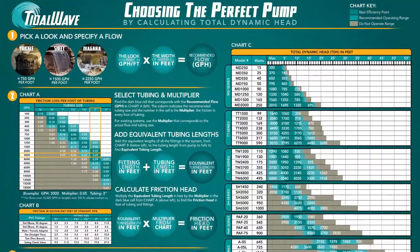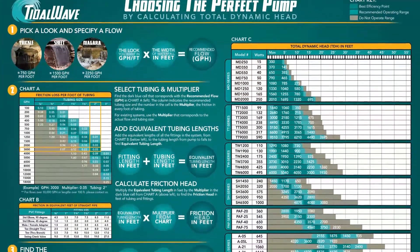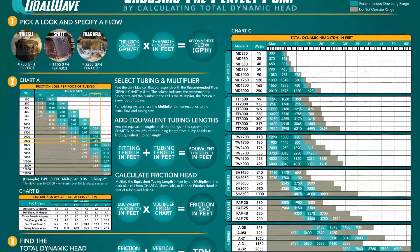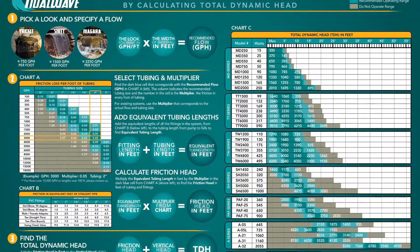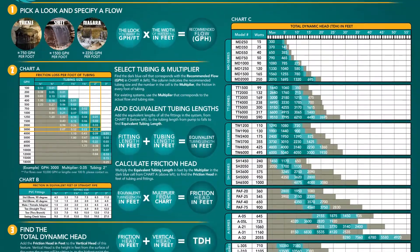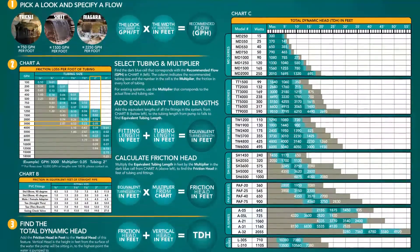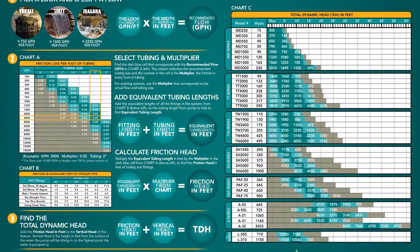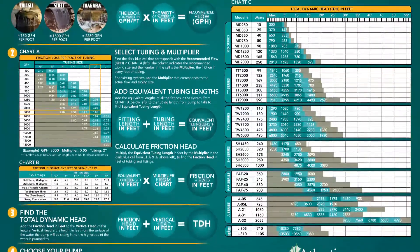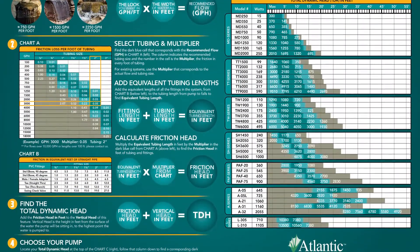Choosing the wrong pump for your water feature can leave you with an unsatisfactory appearance, excessive operating costs, short life for your pump, and dissatisfaction with the project. Choosing the right pump for your application is simple when you know the TDH, or total dynamic head, which is the measure of work your pump will have to perform.